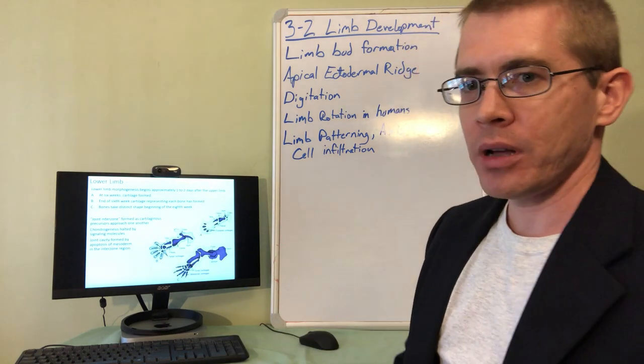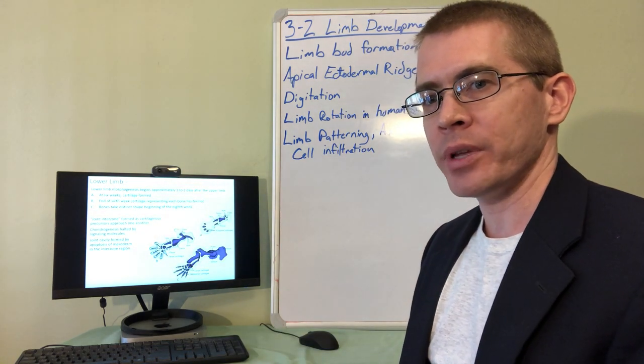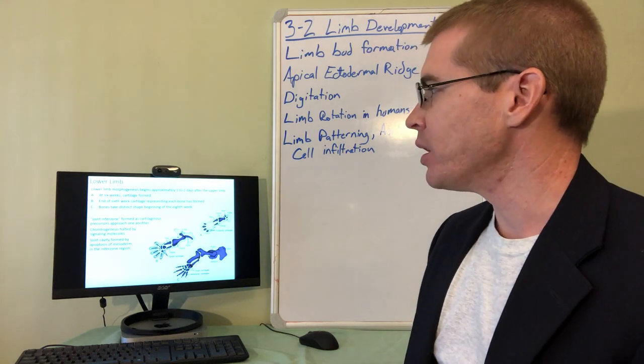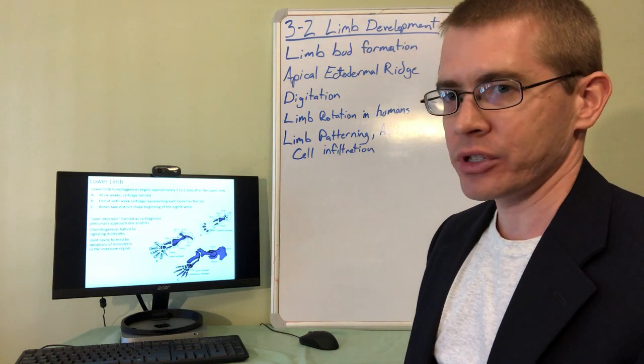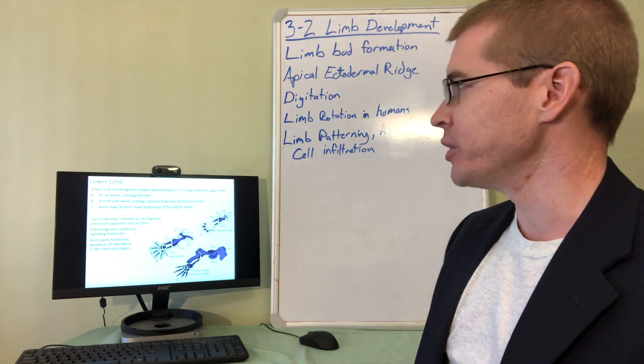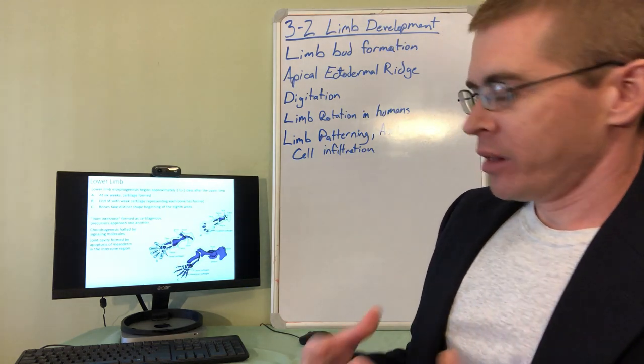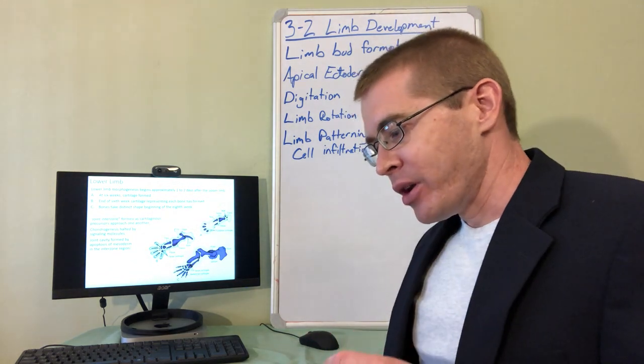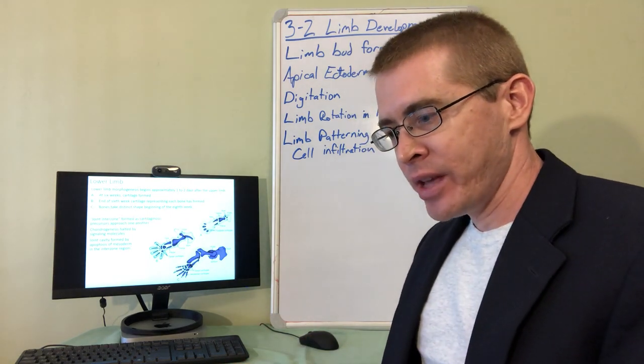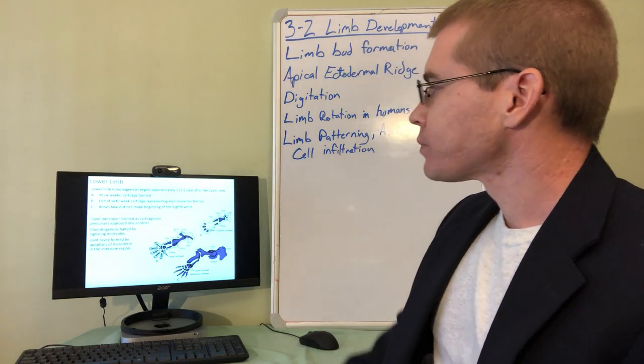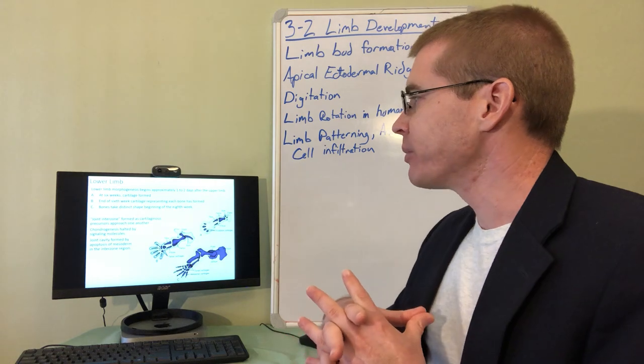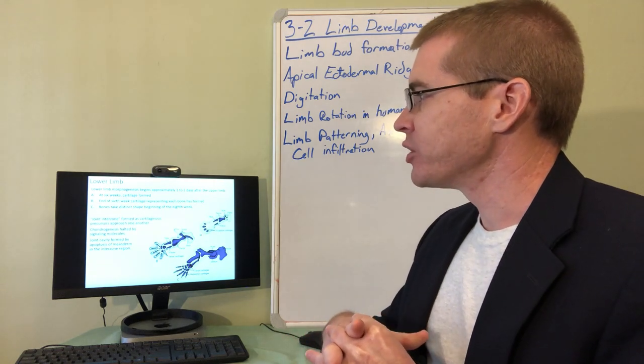The lower limb and the upper limb form in analogous ways and use some of the similar Hox genes and programming to do it. The lower limb development occurs slightly delayed to the upper limb development, but aside from that pretty much analogous processes.